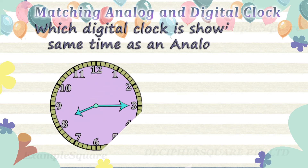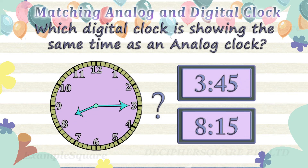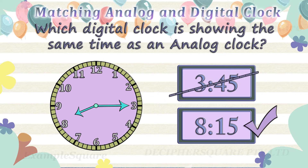Which digital clock is showing the same time as an analog clock? Time in analog clock is 8:15.